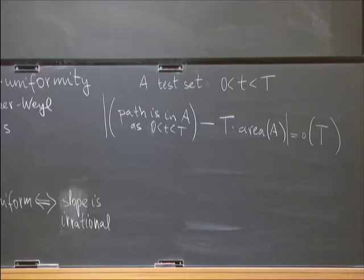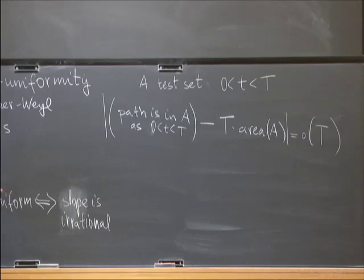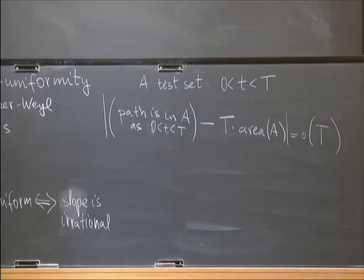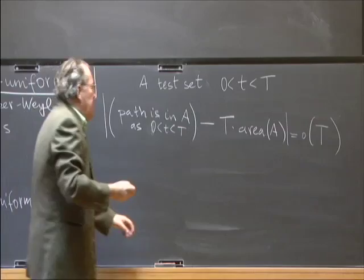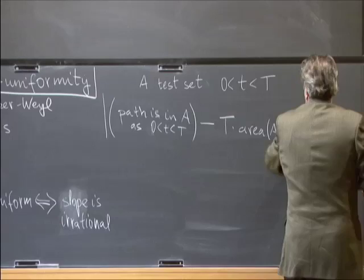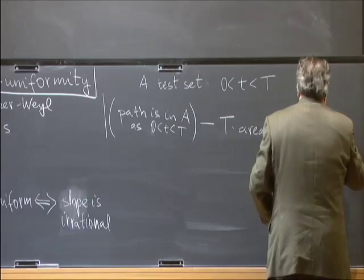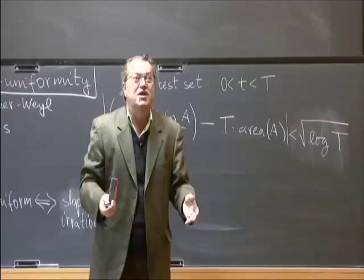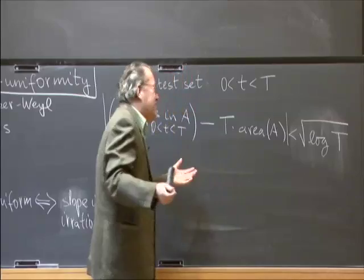What I noticed about two years ago was that if we weaken this — instead of studying every single irrational slope, we just go for the majority — then we can have something called super uniformity. Super uniformity means we can prove an upper bound of square root of log T. This is obviously little-o of T, but it is much smaller than square root T, cube root T, or even log T. Square root of log T is a very small quantity.